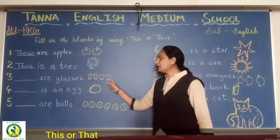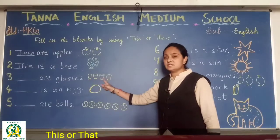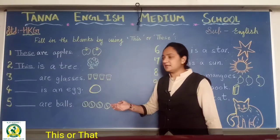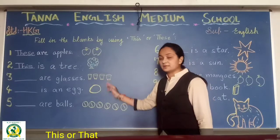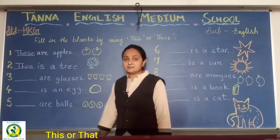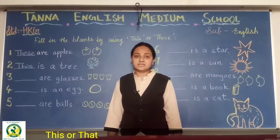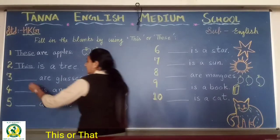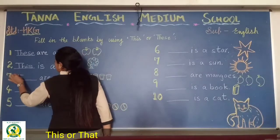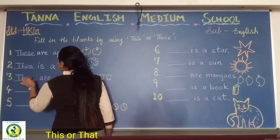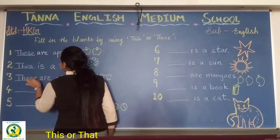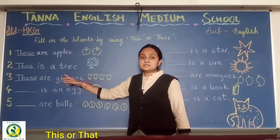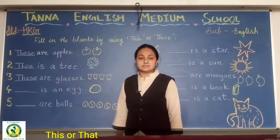Now how many glasses can you see here? More than one — four glasses are here. So what will you write there — 'this' or 'these'? These. T-H-E-S-E. These are glasses.